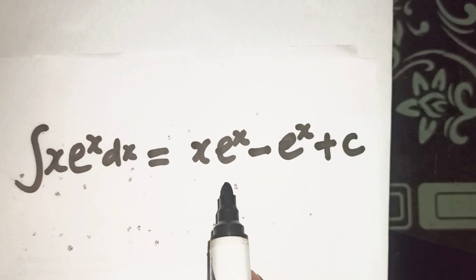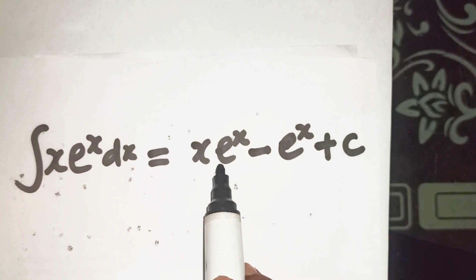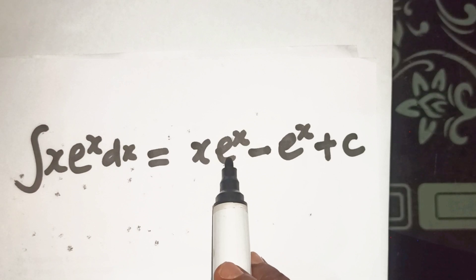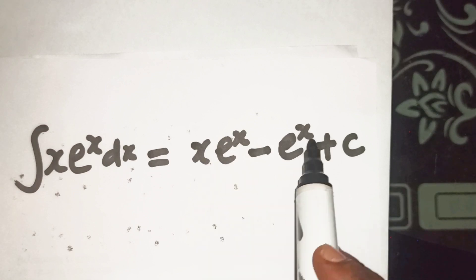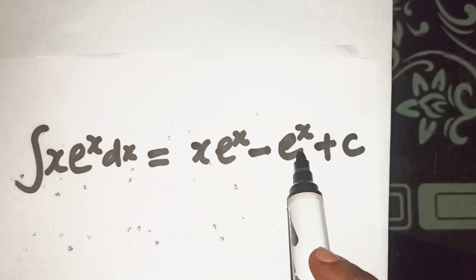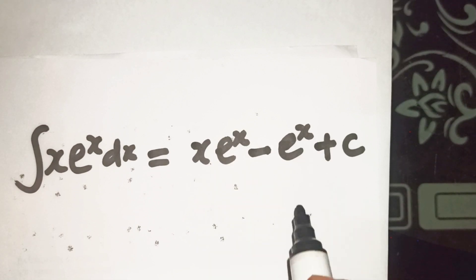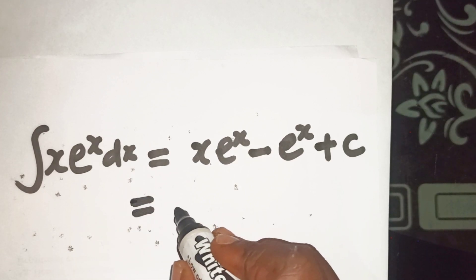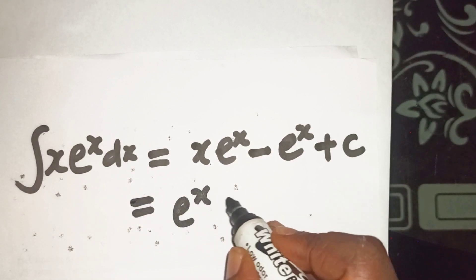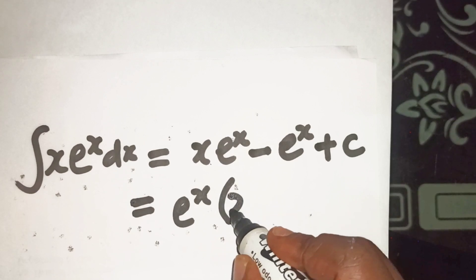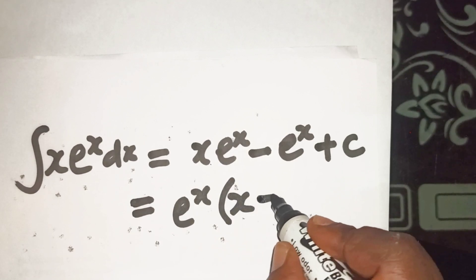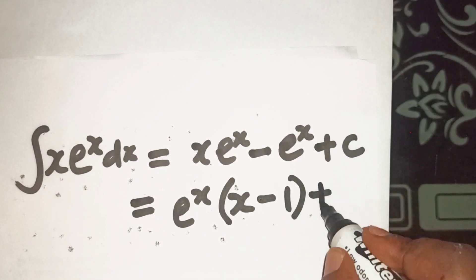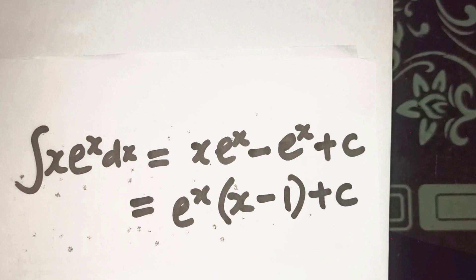We can see that eˣ appears in both terms, so we can factor and write this as eˣ(x − 1) plus c. That is the result of the integration.